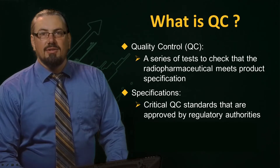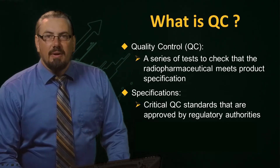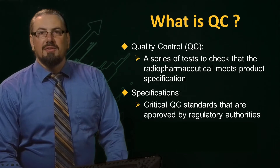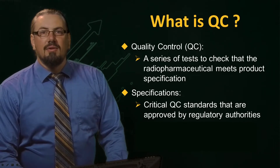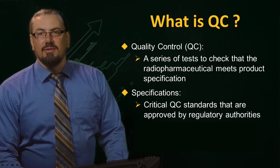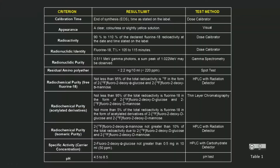These specifications are standards set by regulatory authorities, for example, the US Food and Drug Administration and the Australian Therapeutic Goods Administration. This rather busy table is an example of a product specification for the radiopharmaceutical fluorodeoxyglucose, usually referred to as FDG. Specifications for different radiopharmaceuticals can be found in pharmacopoeias, such as the British and European Pharmacopoeia and the US Pharmacopoeia.